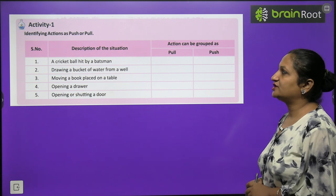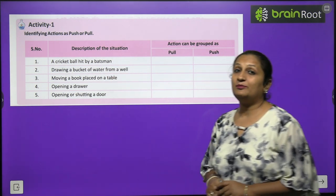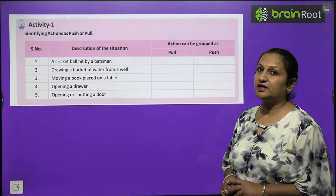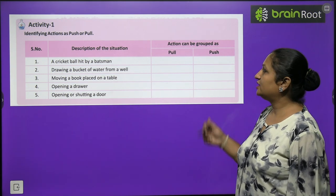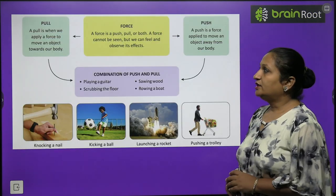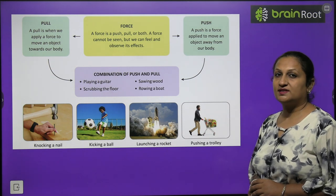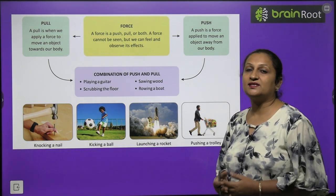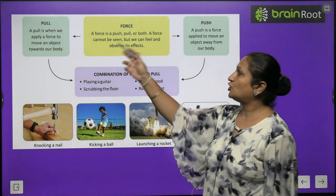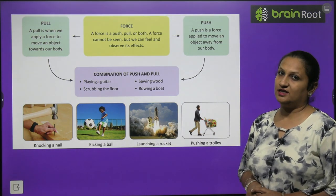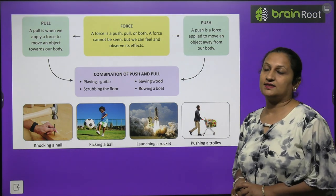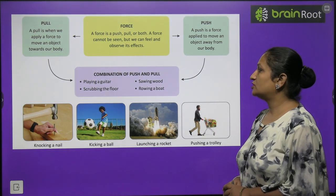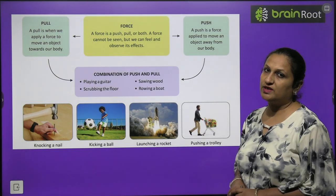Activity: identify the action as push or pull. A cricket ball hit by a batsman — it is a push. Drawing a bucket of water from a well — you are pulling. A pull is when we apply force to move an object towards us, and a push is when we move an object away from us. Together, push and pull make force. We cannot see force — it is not visible — but we can feel it and observe its effects. Examples of both push and pull combined: playing a guitar, scrubbing the floor, sawing wood, rowing a boat.